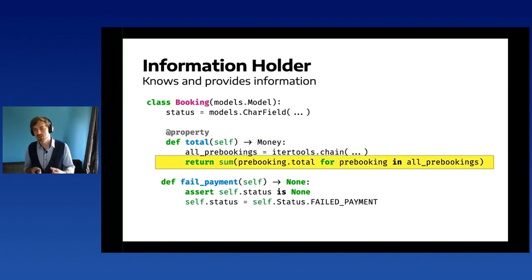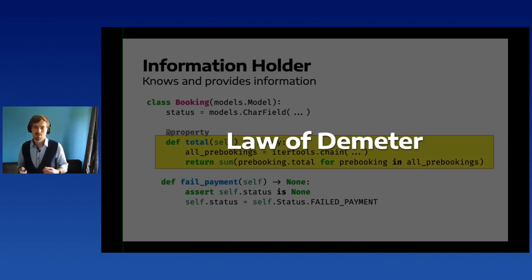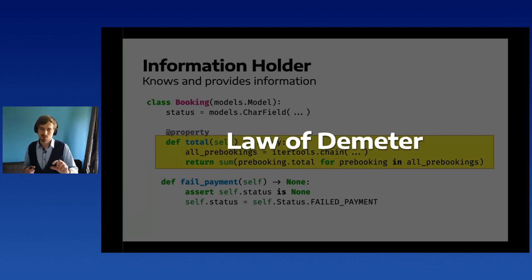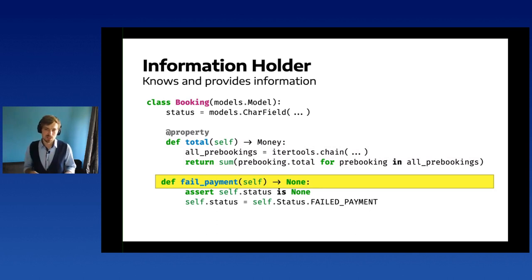A 'total' property meant to provide a total for a booking by summing all pre-booking totals is a good example: it doesn't only keep data but also does basic calculations. This is what making objects smart means. If we let an object keep data and also calculate something based on that data, we make it smarter — and this relates to the Law of Demeter. In this example, we don't iterate over pre-bookings outside the booking; we let it happen inside. No one has to do booking.pre_bookings and then iterate — you go one level deeper.